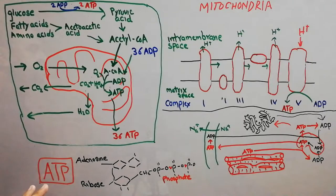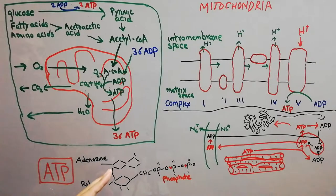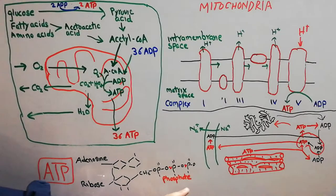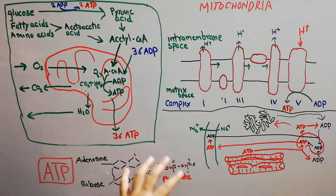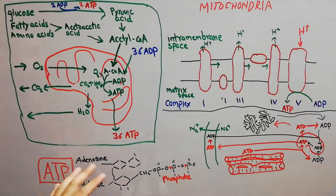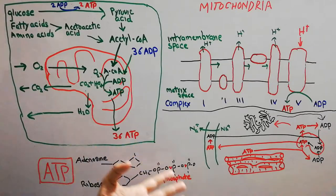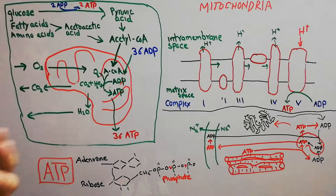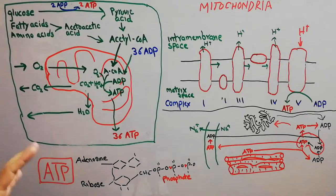First, what is ATP? ATP — also known as adenosine triphosphate — consists of a nitrogenous base, a sugar, and three phosphate units. It stores a lot of energy, and when energy is needed in the body it is provided by ATP. So it is an energy currency, like a dollar or a pound.